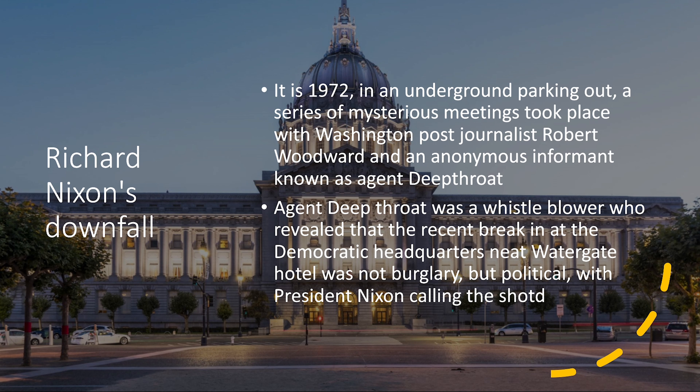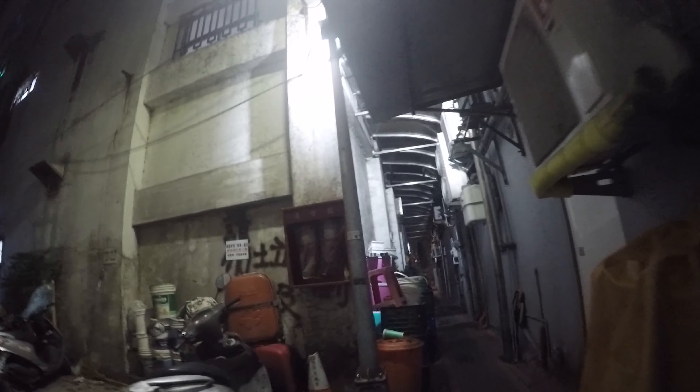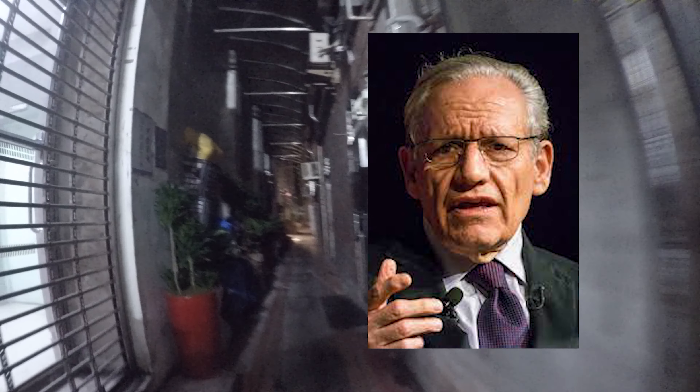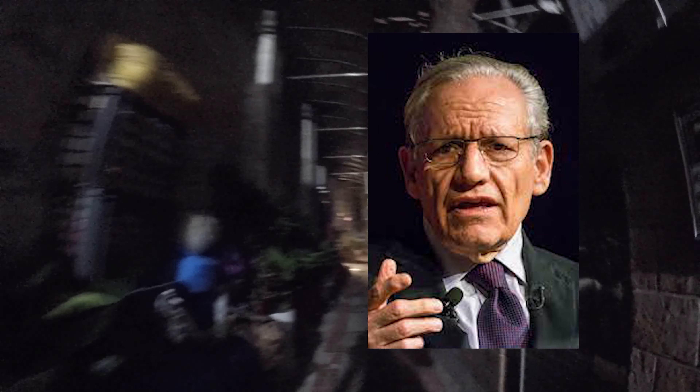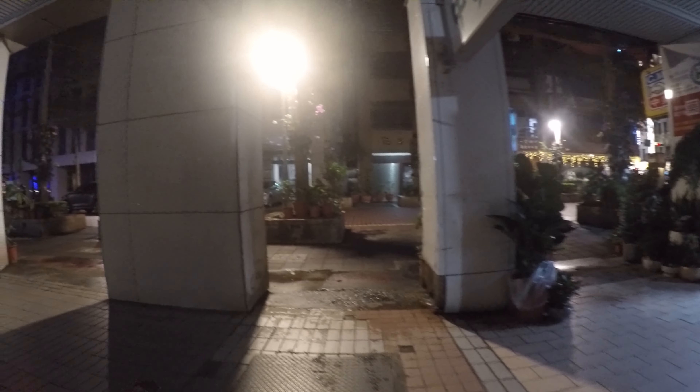So let's rewind the clock back a few decades. It is the year of 1972, and in a secret underground parking lot, a series of mysterious meetings took place between a Washington Post journalist, Bob Woodward, and at the time there was an anonymous informant known by the codename Agent Deep Throat. Agent Deep Throat was a whistleblower in Nixon's administration, and during these secret meetings underground, he revealed many dark secrets regarding the recent break-in at the Democratic headquarters near the Watergate Hotel.